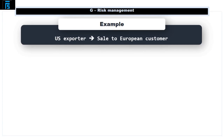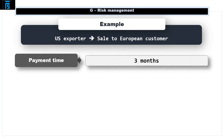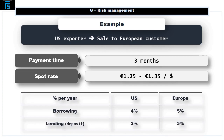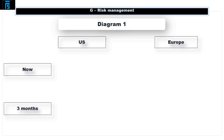I am a US exporter and I've made a sale to my European customer, who is due to pay me in three months time. Suppose the current spot rate is 1.25 to 1.35 euros per dollar, and interest rates are: US and European borrowing rates at 4% and 5%, and lending or deposit rates at 2% and 3% per annum. These rates are generally quoted on a per annum basis. The value of the sale is 1 million euros. Let's work through a standard diagram with the US and Europe across the top and a timeline down the side showing now and in 3 months time.